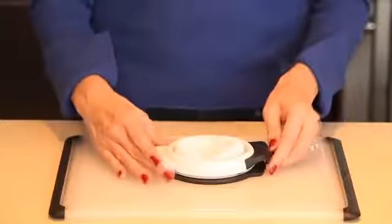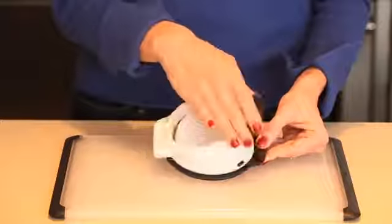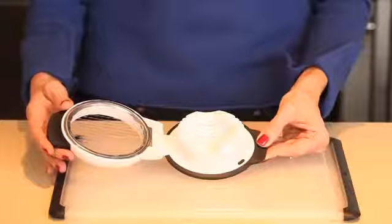The OXO Egg Slicer is a simple solution for quickly and easily slicing hard-boiled eggs. This no-fuss slicer yields perfect 5mm slices with one simple press.